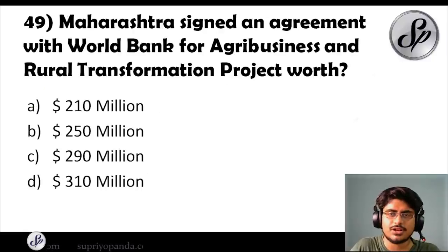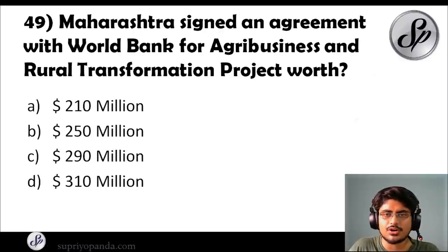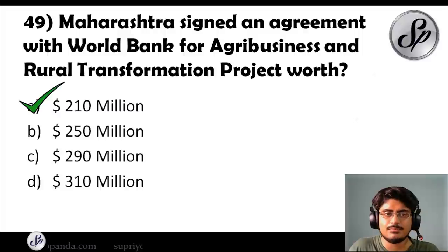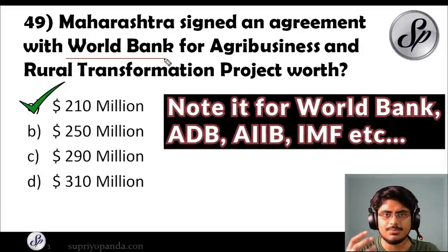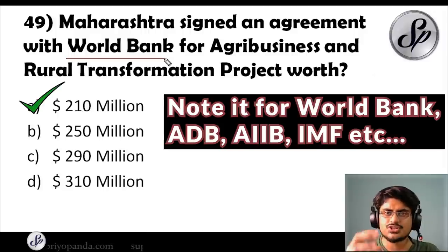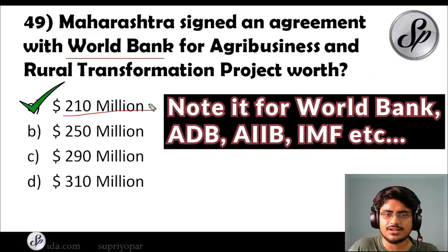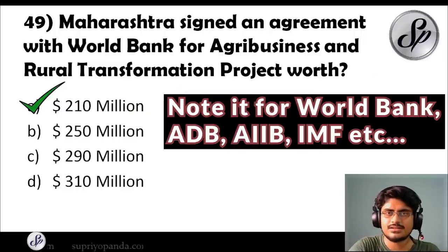Question forty-nine: Maharashtra signed an agreement with the World Bank for an agribusiness and rural transformation project. Worth how much? The answer is $210 million. As a reminder — for World Bank, ADB, and AIIB loans and projects, always remember the project name and the figures, because exams can ask either.